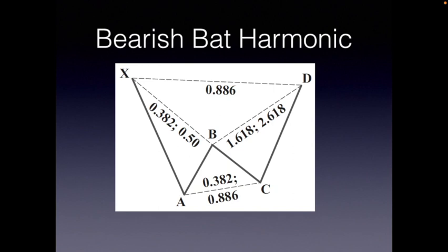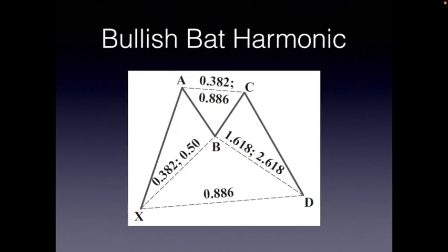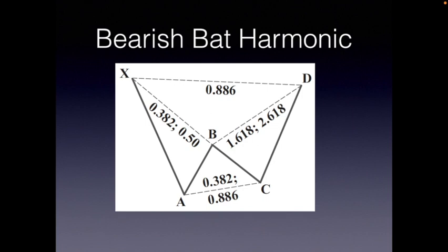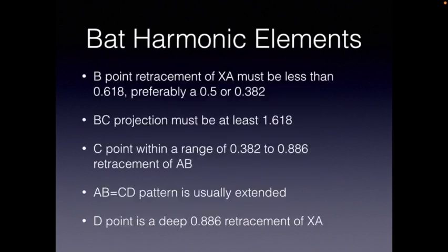Here we look at the bearish bat, which is the exact same thing — just upside down. The bat harmonic elements: the B point retracement of X to A must be less than 0.618. Preferably we're looking for a 0.5 or a 0.382.